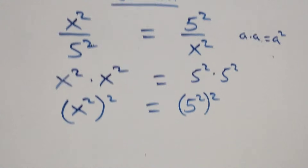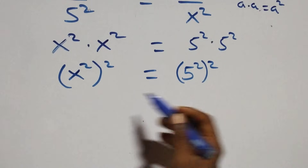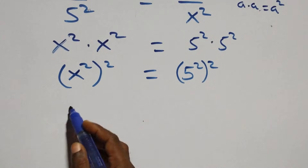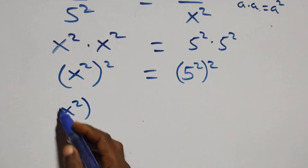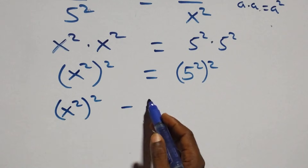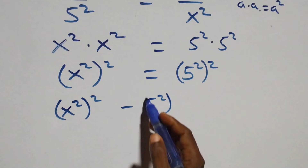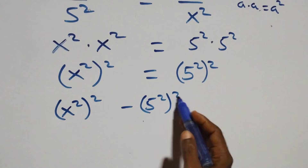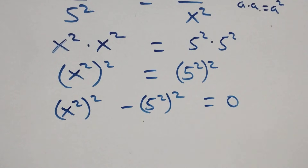The next step: take the right hand side to the left hand side, and we have x squared squared minus five squared squared equals zero.